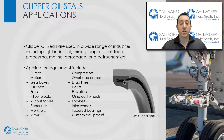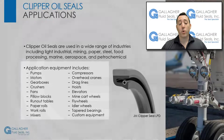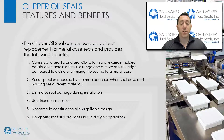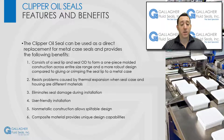They can be found in a variety of equipment such as pumps, motors, gearboxes, crushers, rollers, mixers, compressors, drag lines, hoists, tapered bearings, and more. Clipper oil seals can be used as a direct replacement for metal case seals and provide the following benefits: a composite outer diameter provides a gasket-type seal at the outer diameter for improved sealing in worn housings; compression plates are not required for seal retention or lip loading; the tight press fit eliminates the need for a cover plate; and they will not rust or corrode. Parker Clipper oil seals consist of a seal lip and a seal outer diameter to form a one-piece molded construction across the entire size range — a more robust design compared to gluing or crimping the seal lip to a metal case. They resist problems caused by thermal expansion when the seal case and housing are different materials. Parker Clipper oil seals are known for user-friendly installation and can help eliminate seal damage during installation.